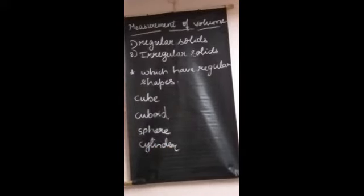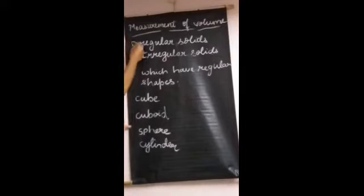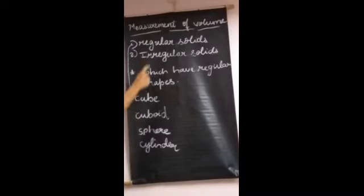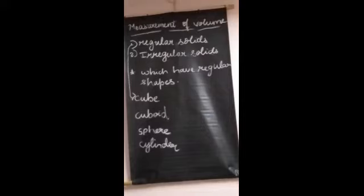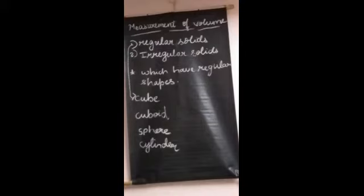So cube, cuboid, sphere, and cylinder are regular solids. Now, what are irregular solids? The volume of irregular solids — how can we find it? We can find the volume of irregular solids with the help of the measuring cylinder.